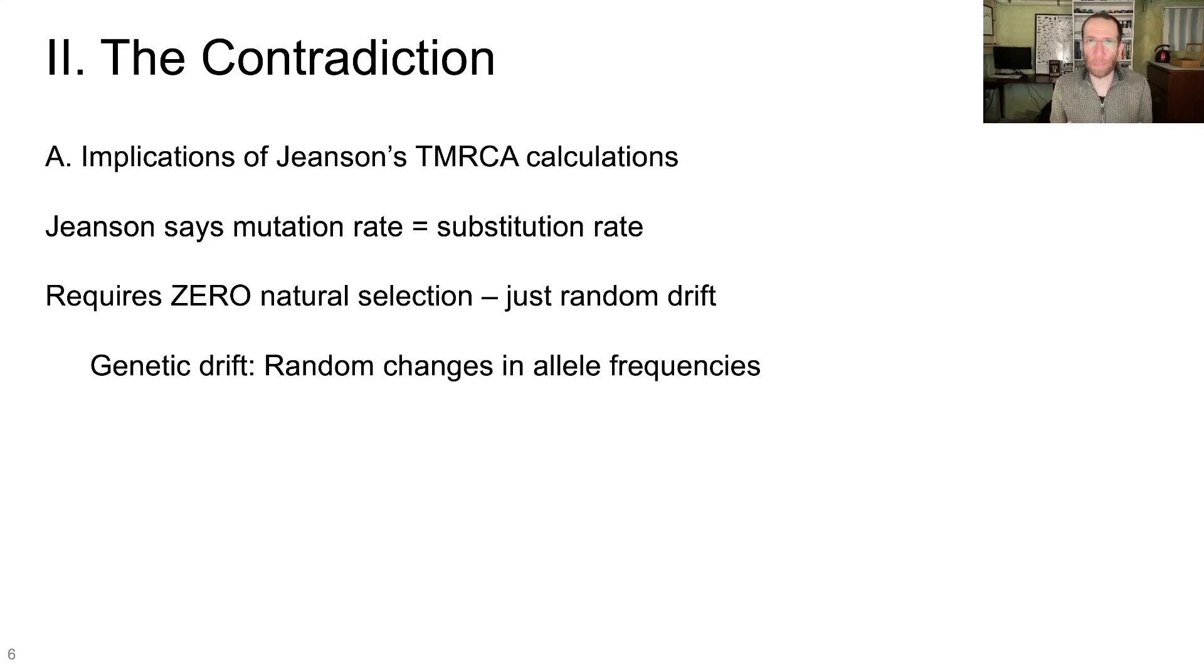So what's the contradiction here? In order to see the problem, we first have to look at the implications of Jensen's time to most recent common ancestor calculations. Jensen says the mutation rate equals the substitution rate. That's only true when there is zero natural selection. Instead, the frequency of mutations must be completely governed by something called genetic drift, which is a random process. It's random changes in allele frequency.